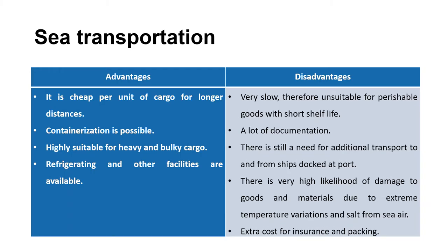Advantages of sea transportation: it is cheaper per unit of cargo for longer distances compared to air transportation, containerization is possible, and it is highly suitable for heavy and bulky cargo. Refrigerating and other facilities are available if required. Disadvantages: it is very slow, so it is not suitable for perishable goods with short shelf life. A lot of documentation is needed. Additional transport is required to and from ports, and there is a high likelihood of damage to goods due to extreme temperature variations and sea air. There are also extra costs for insurance and packaging.